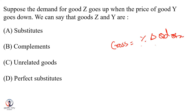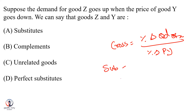The cross-elasticity of demand is the percentage change in quantity of X divided by the percentage change in price of Y. If we use cross-elasticity of demand, the two categories are substitute goods and complementary goods.